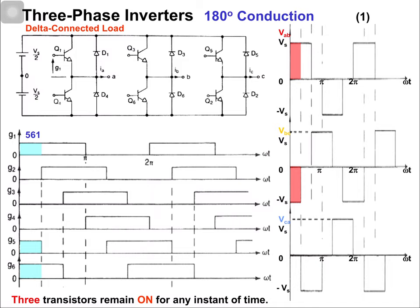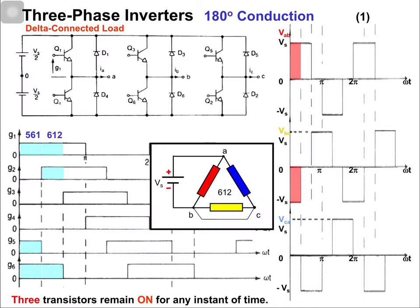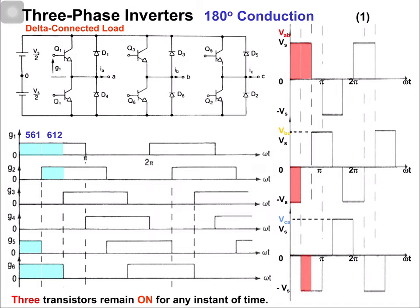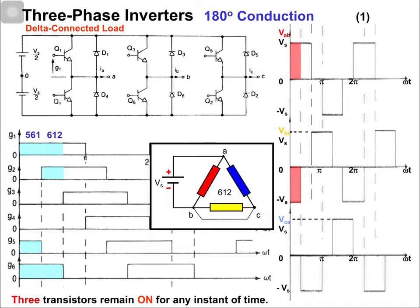In the next switching state, because of switch 1 phase A is positive. Because of switch 2, phase C is connected with the negative terminal. Because of switch 6, phase B is also connected with the negative terminal. So phase B and phase C are connected with the negative terminal and phase A with the positive terminal.